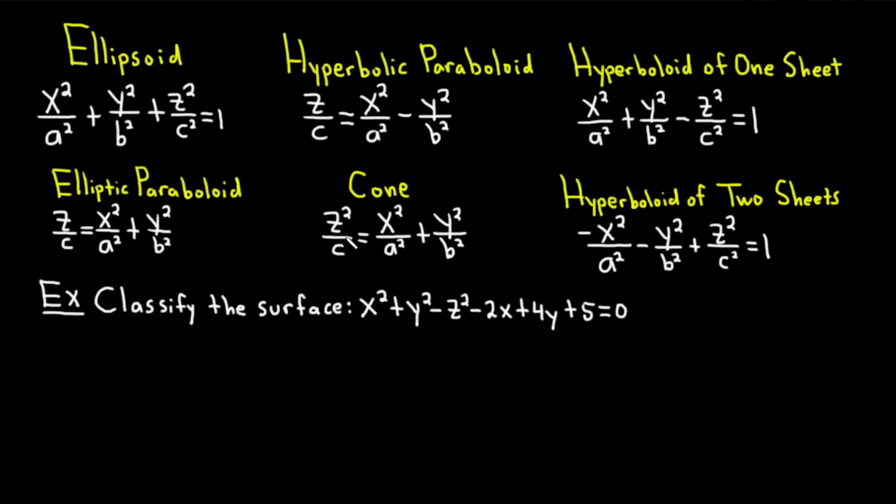Then we have the cone, which is z squared over c equals x squared over a squared plus y squared over b squared.